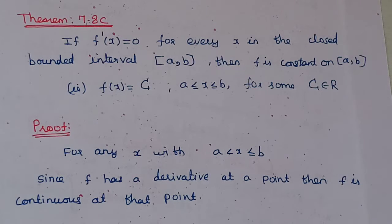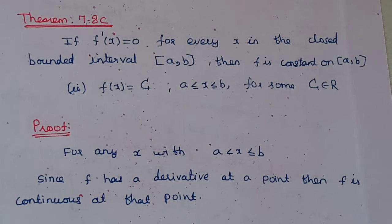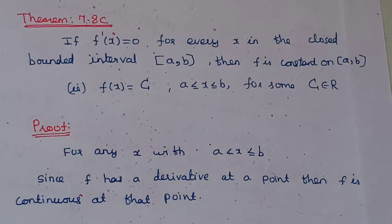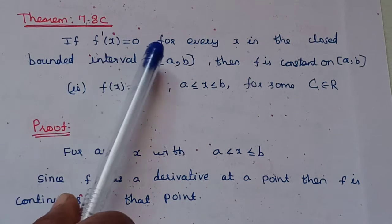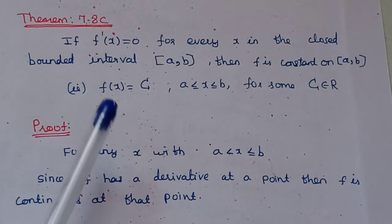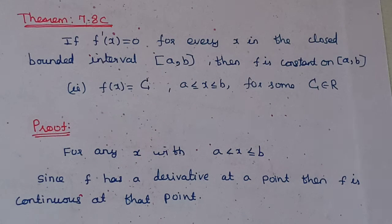If f'(x) is equal to 0 for every x in the closed bounded interval [a, b], then f is a constant on [a, b]. If we are learning the derivative of constant 0, then we will prove it.